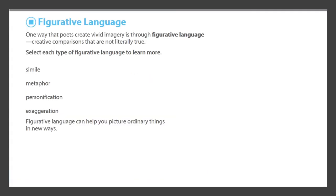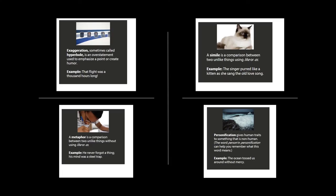One way that poets create vivid imagery is through figurative language — creative comparisons that are not literally true. These include similes, metaphors, personification, and exaggeration. Figurative language can help you picture ordinary things in new ways. Take a moment to take notes on types of figurative language: exaggeration or hyperbole, metaphors, similes, and personification.